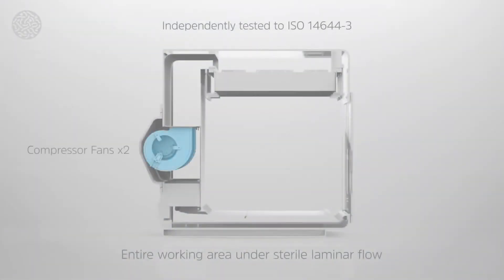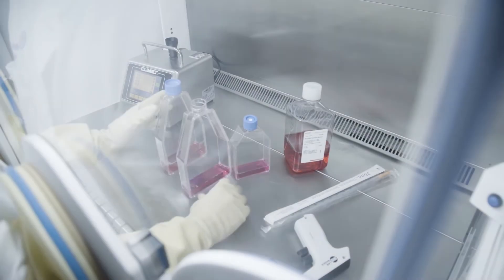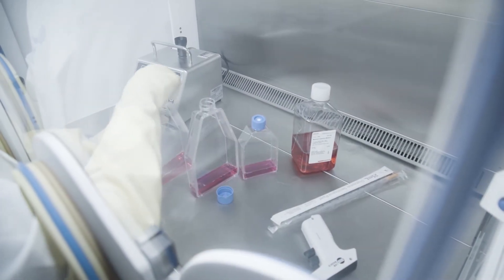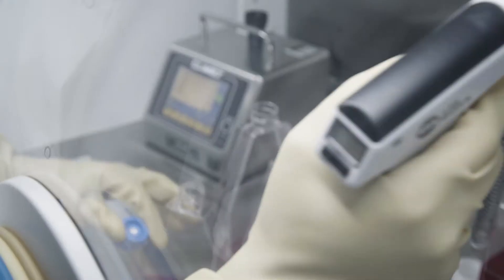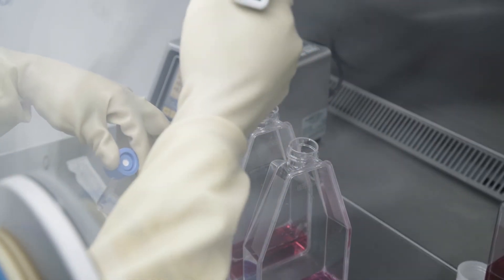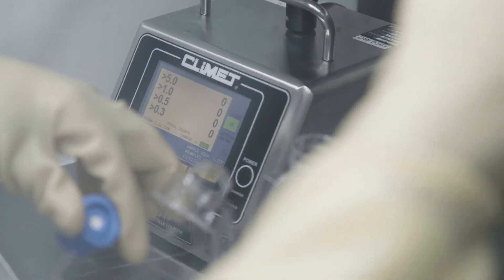Laminar airflow is mapped to ensure air velocity is homogeneous and within the speeds for Grade A zones set out in Annex 1 of the EU Guidelines to Good Manufacturing Practice for Medicinal Products. Combining laminar airflow with a choice of either an H14 HEPA filter or a U15 ULPA filter ensures particle counts remain below those required for Grade A working environments, both at rest and in operation.